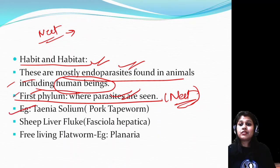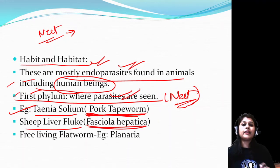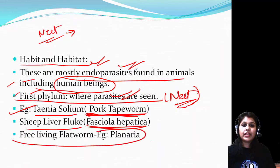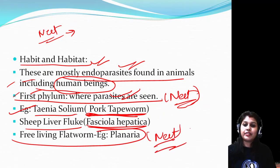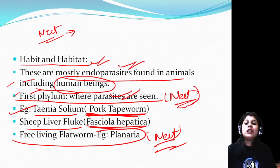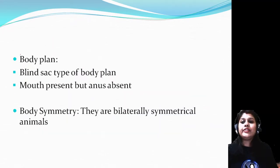Examples include Taenia solium - the pork tapeworm - because the tapeworm's life cycle first completes in humans and then moves to pigs. Fasciola hepatica is the sheep liver fluke. Planaria is the exception - it is a free-living flatworm. So a common exam question: which flatworm is free-living? The answer is planaria.